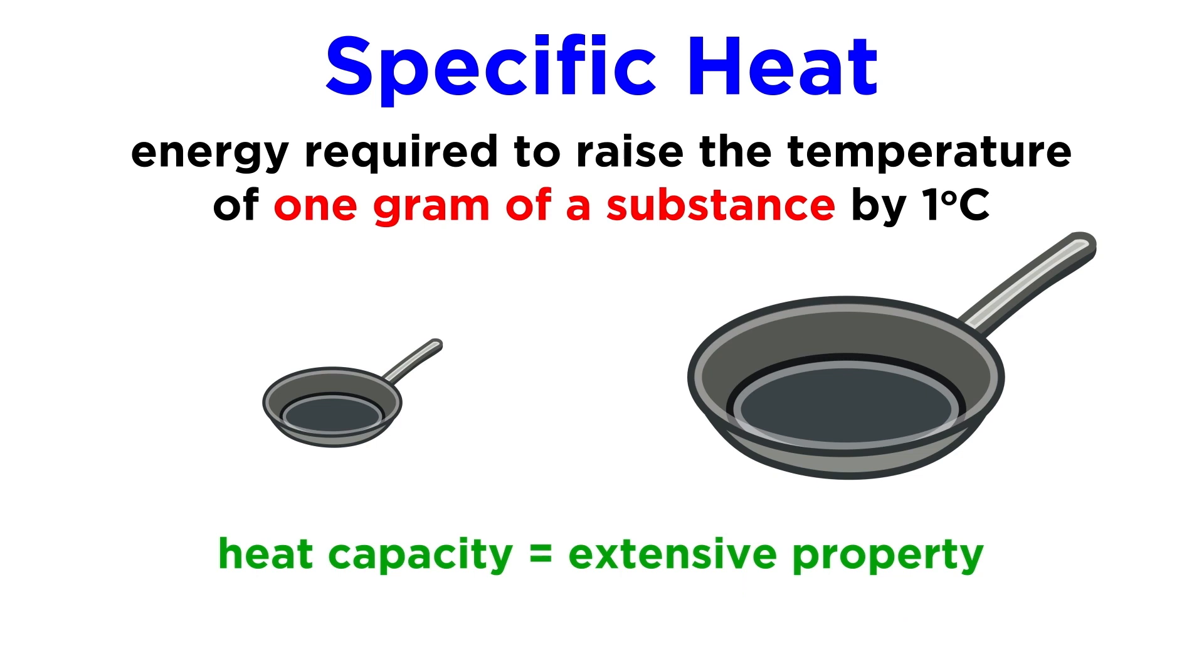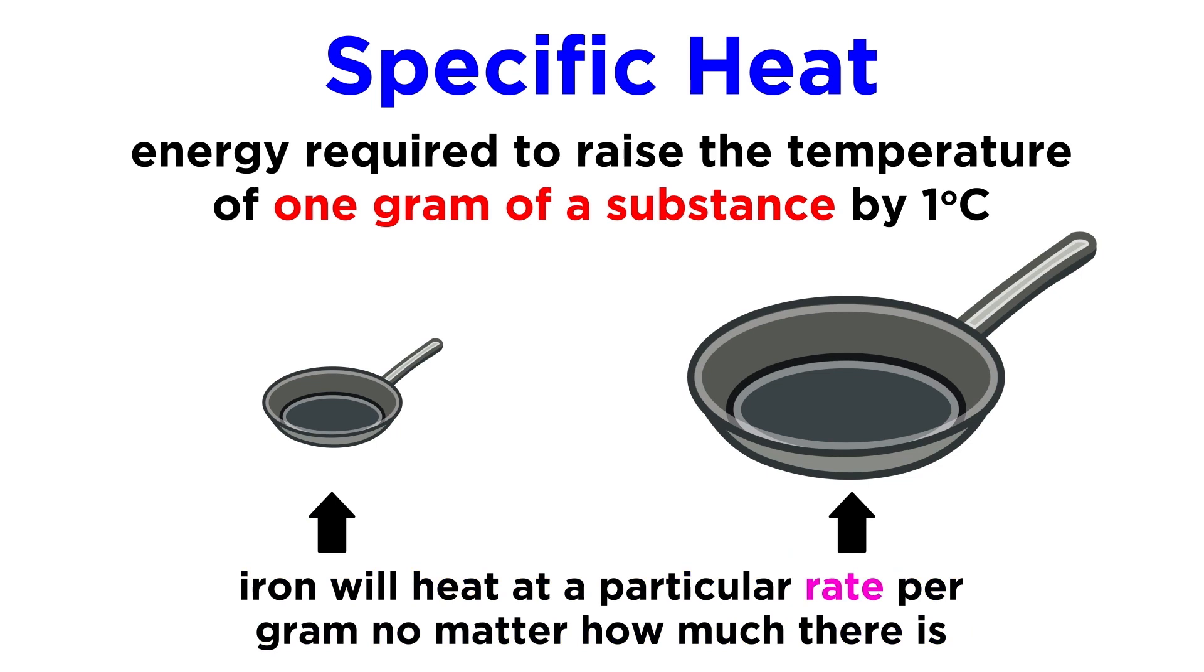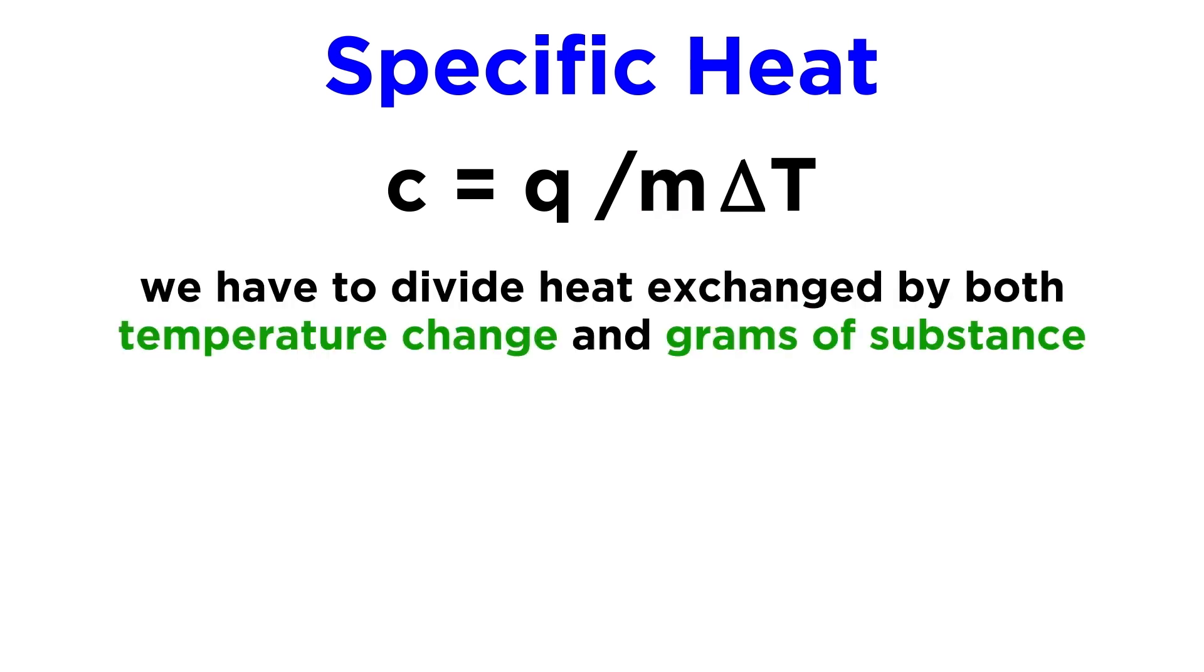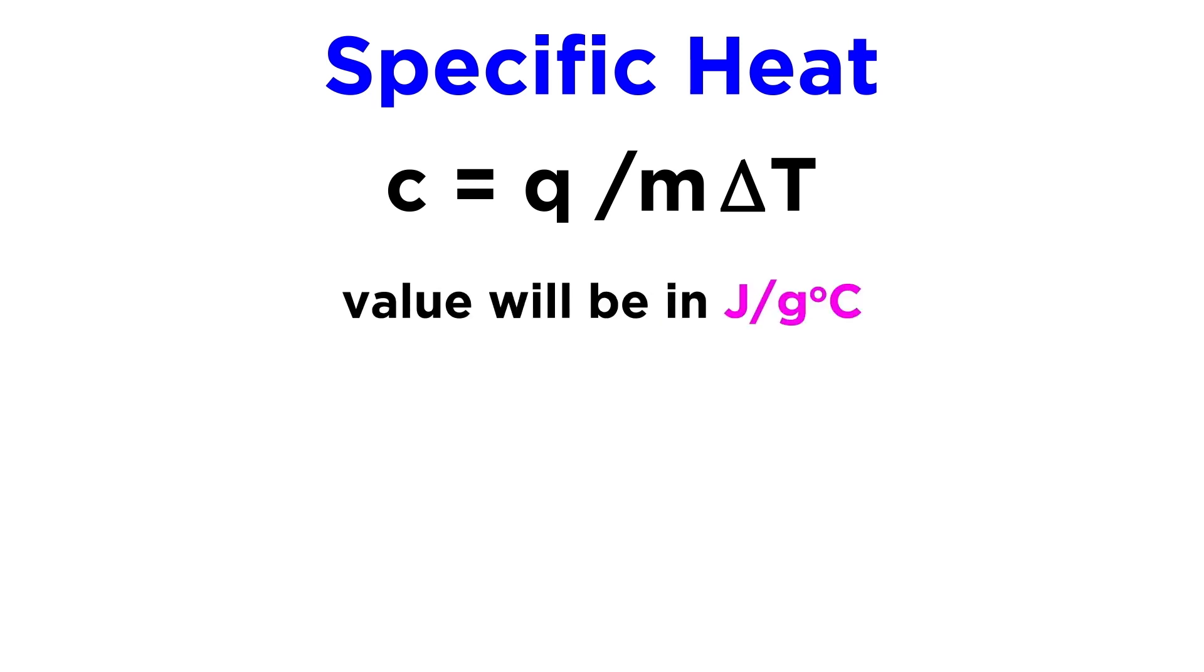This means that whereas heat capacity is an extensive property, depending on the amount of substance present, specific heat is an intensive property, and does not depend on the amount of substance present. Iron will heat at a particular rate per gram, regardless of how much there is. The specific heat of an object can be calculated similarly to heat capacity, but this time with an additional term for mass. We will need to divide the heat exchanged not just by the temperature change, but also by the number of grams of the substance present, to get a value that represents joules per gram degree Celsius.